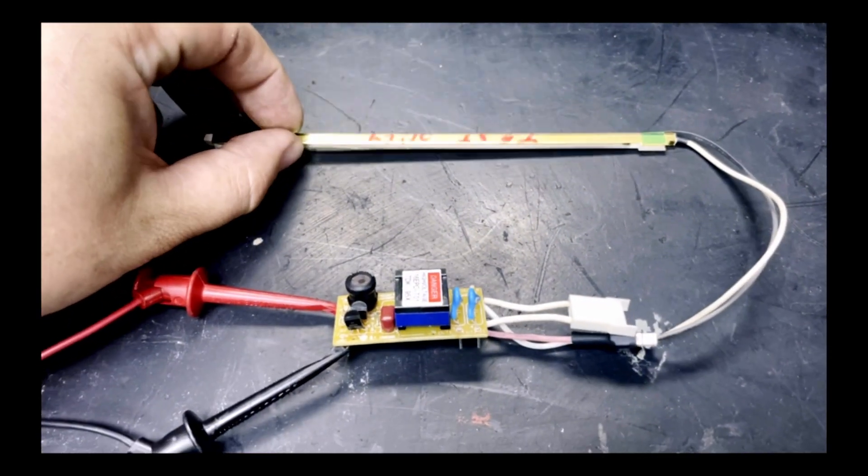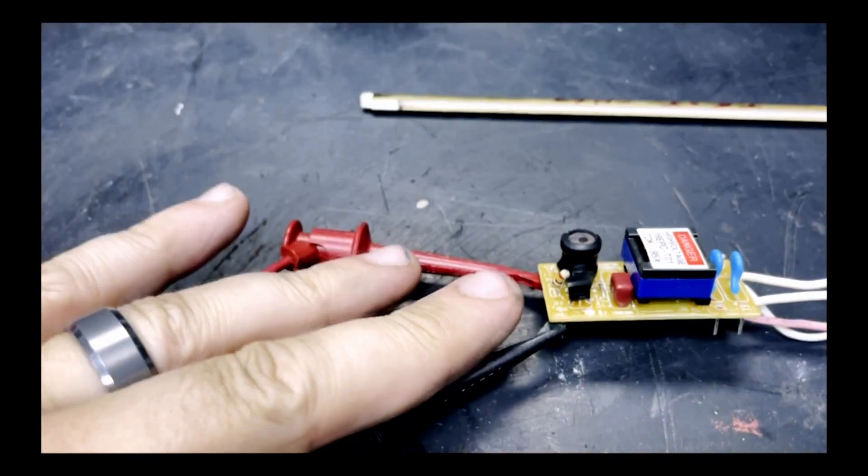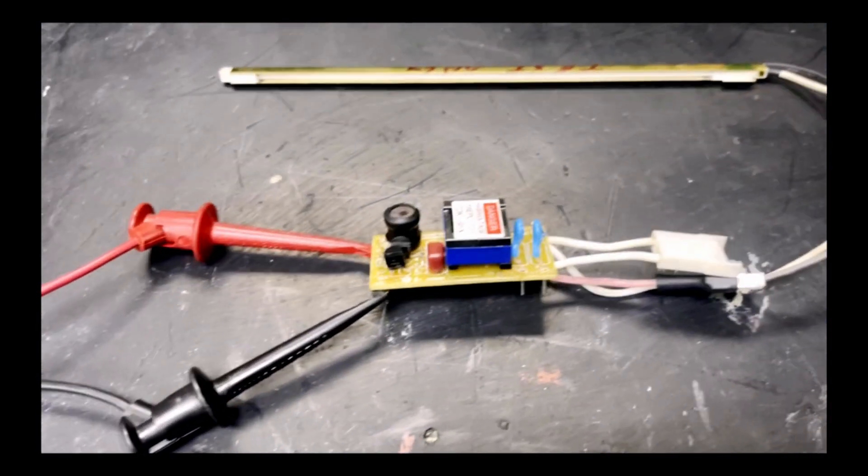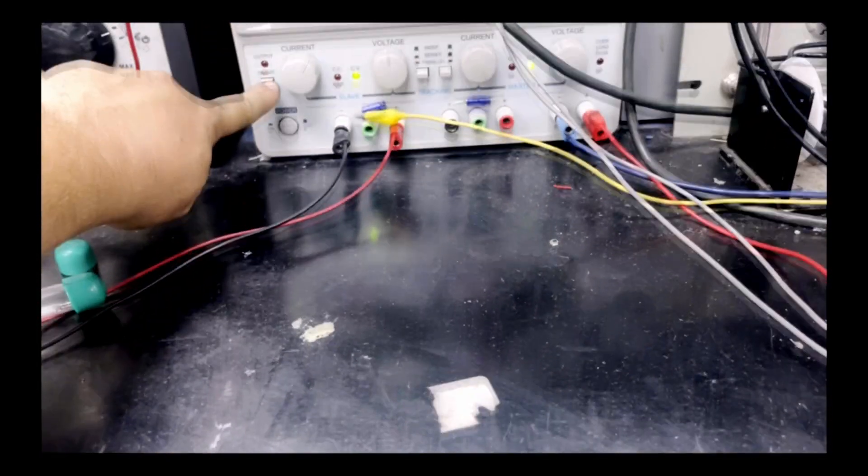So we've got it hooked up to a test bulb and we are going to apply power. This particular inverter is 8 volts DC. And we are going to go ahead and provide that DC here and see if this bulb lights up. So we will turn our output on.